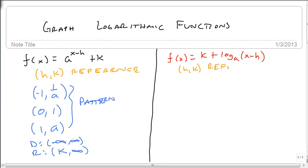but our pattern changes. Instead of going up 1 and, or over 1 and up a, the whole thing changes. So instead of being minus 1, 1 over a, it's now 1 over a minus 1.